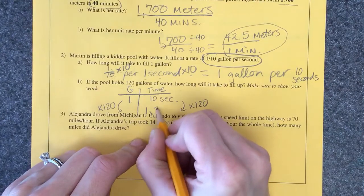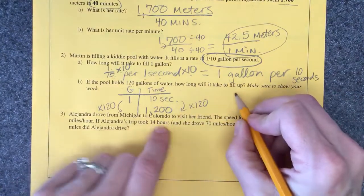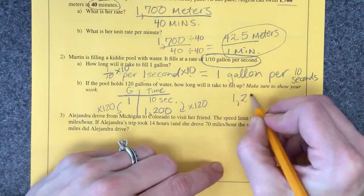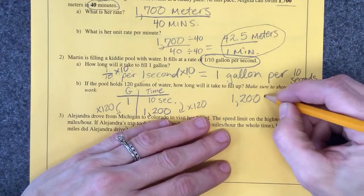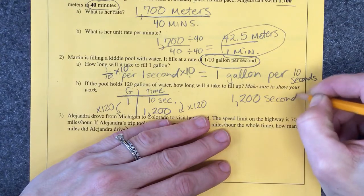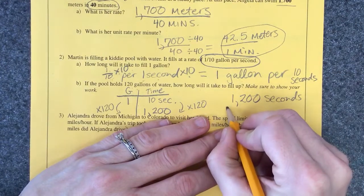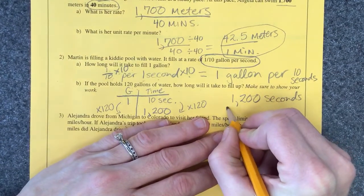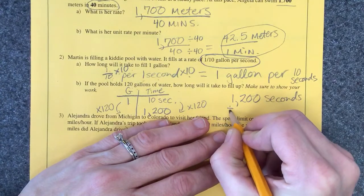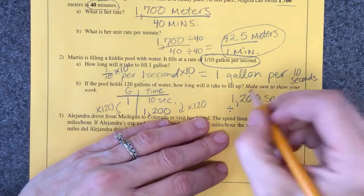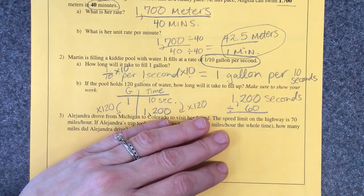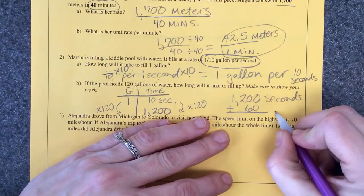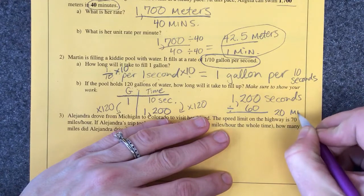Excellent, very good. So we have 1200 seconds but we want to change this into minutes, so let's divide it by how many seconds are in a minute. 60. And what does that give you? 20. So 20 minutes is how long this will take. Beautiful.